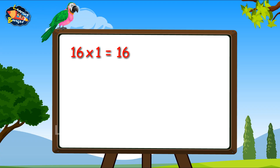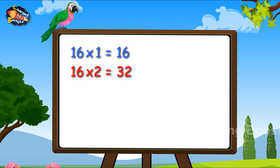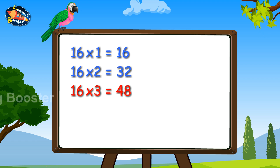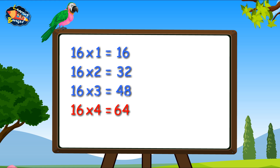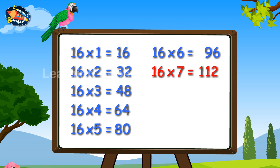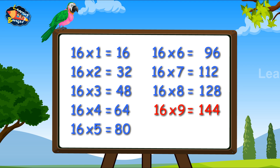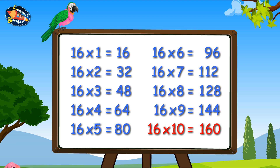Sixteen ones are sixteen. Sixteen twos are thirty-two. Sixteen threes are forty-eight. Sixteen fours are sixty-four. Sixteen fives are eighty. Sixteen sixes are ninety-six. Sixteen sevens are one hundred and twelve. Sixteen eights are one hundred and twenty-eight. Sixteen nines are one hundred and forty-four. Sixteen tens are one hundred and sixty.